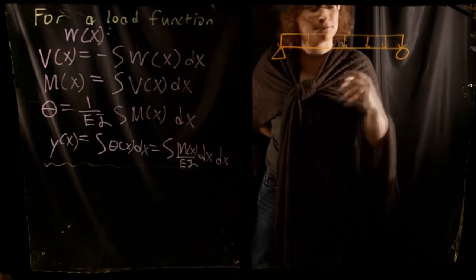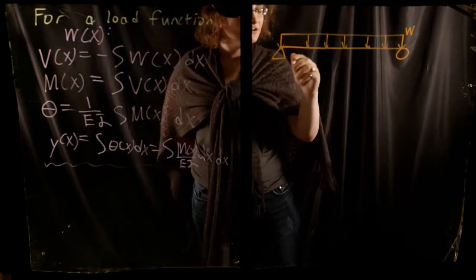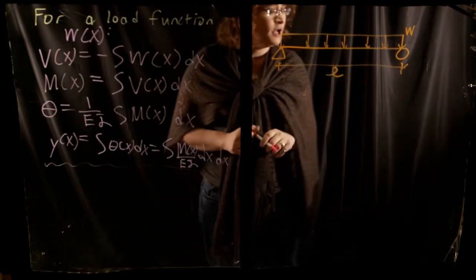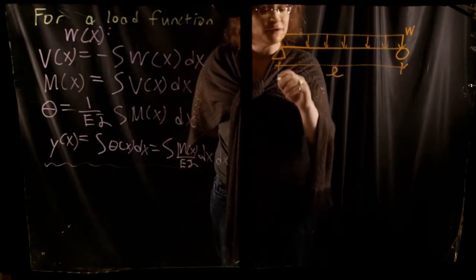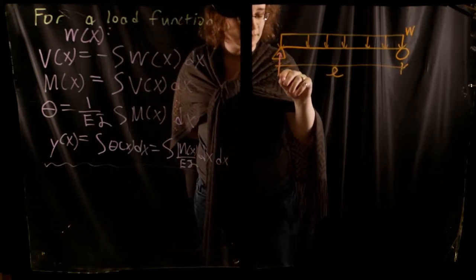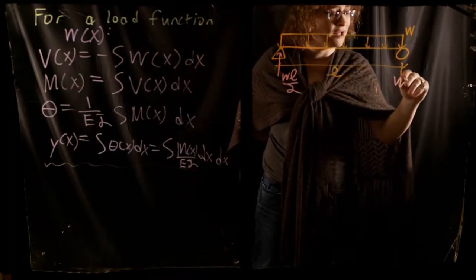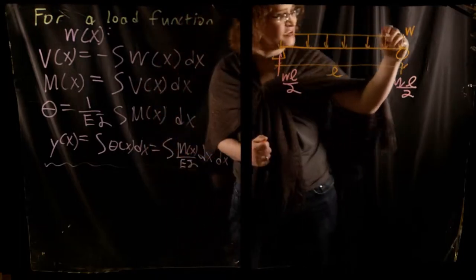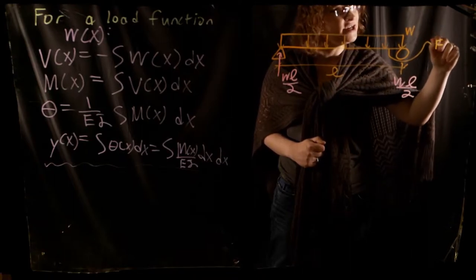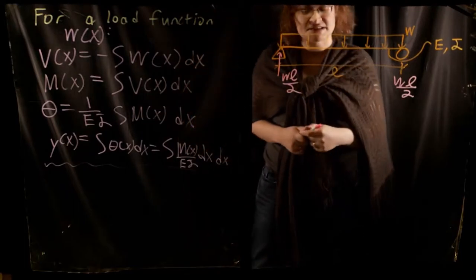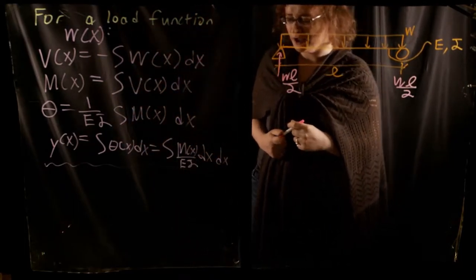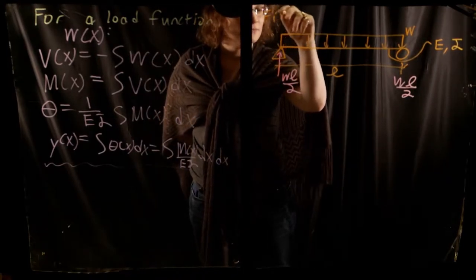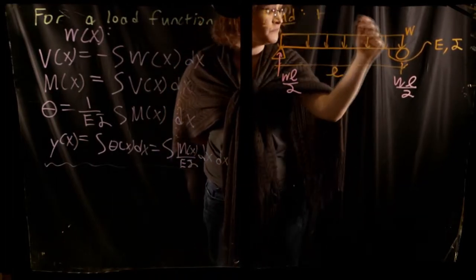We have a simply supported beam with a uniform distributed load w across it and length L. By simple equilibrium, the reactions at each side will just be wL/2 and wL/2. The beam has a modulus of elasticity E and a moment of inertia I. We want to use these equations to develop the equation for the maximum deflection of a simply supported beam at mid-span — find the maximum deflection in terms of the provided variables.